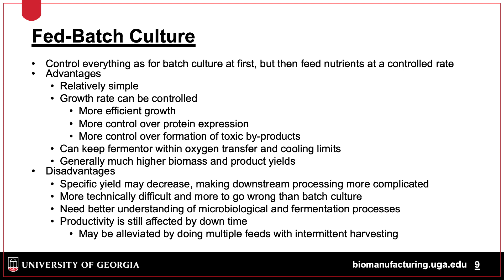In fed batch culture, the culture is initially grown in batch phase, then nutrients are fed in at a controlled rate. The process is relatively simple, but the growth rate will need to be determined, or feed can be added in a linear fashion. The growth of cells is more efficient and controlled with less formation of byproducts such as acids. Because cells are grown in a more controlled fashion than batch, it is easier to control oxygen transfer and temperature, with more biomass being produced compared to batch methods.